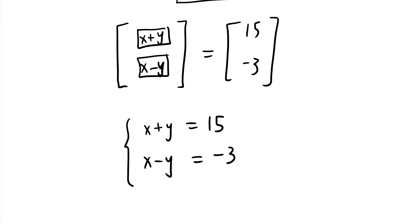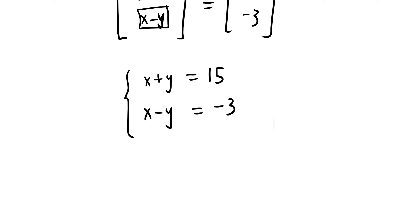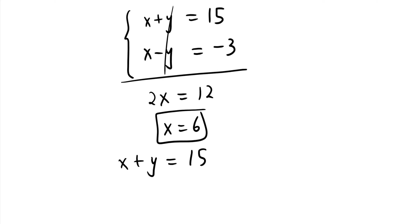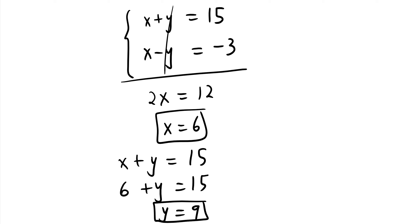This gives us a system of equations, easy to solve by elimination. Adding them: 2x = 12, so x = 6. Substituting back: 6 + y = 15, so y = 9. We solved for x and y using matrix multiplication and then applying what we learned about equal matrices.